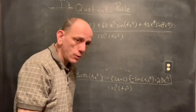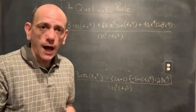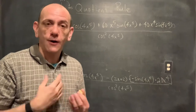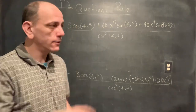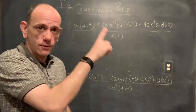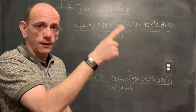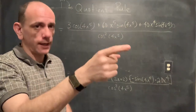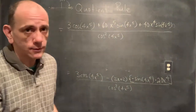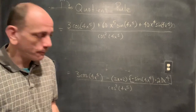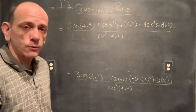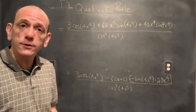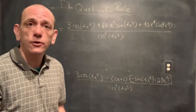So that's the quotient rule: low d high minus high d low, all over the square of what's below — the derivative of the first times the second minus the first times the derivative of the second, all over the second squared. We'll use this a bit more to help us derive our trig functions.